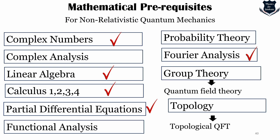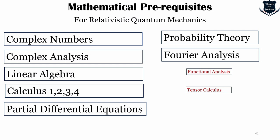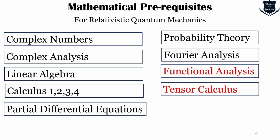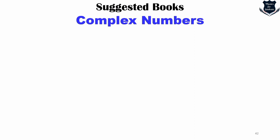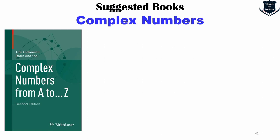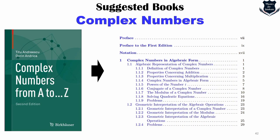For relativistic quantum mechanics you need all of those plus functional analysis and tensor categories, but this video focuses on non-relativistic quantum mechanics. The first book recommendation for complex numbers is Andreescu and Andrica's 'Complex Numbers from A to Z' — an excellent book covering complex numbers in algebraic form, geometric interpretation, powers of i, conjugates of complex numbers, and everything you need.